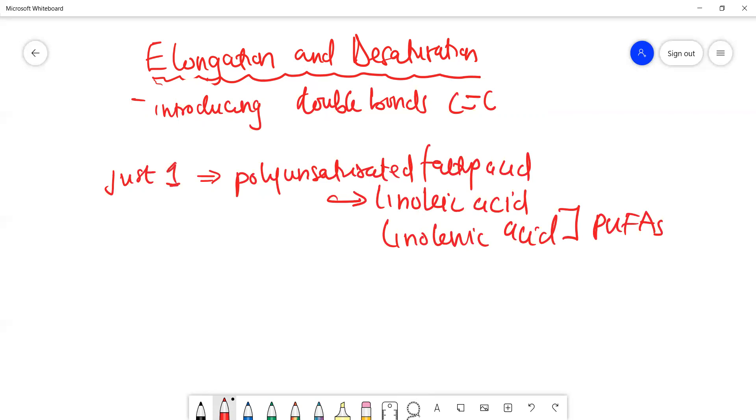But what we are seeing here is that from palmitic acid, the body can only introduce just one double bond, and it is very specific. The enzymes are called desaturases. The body will only introduce the double bond at either carbon number 4, 5, 6, or 9.